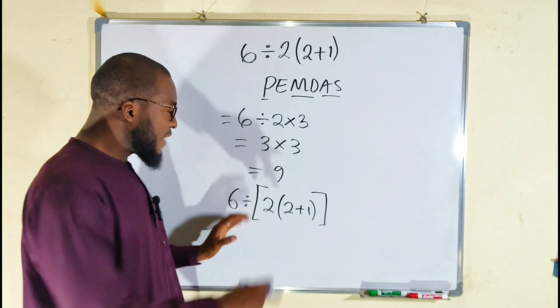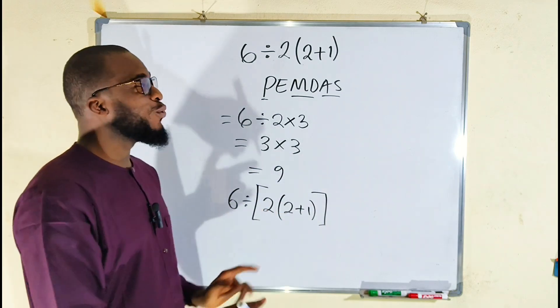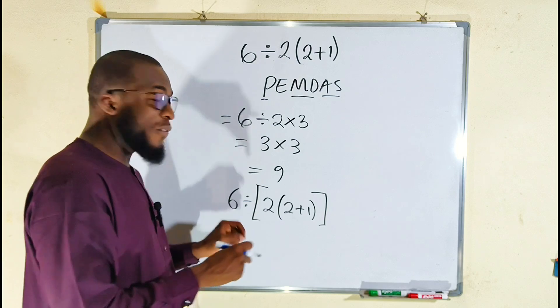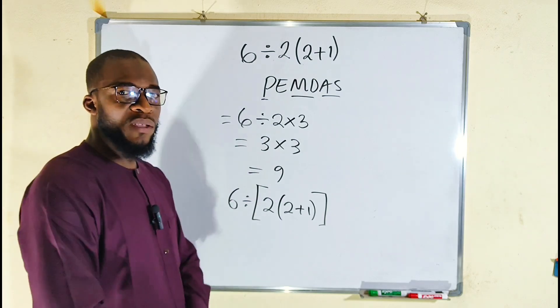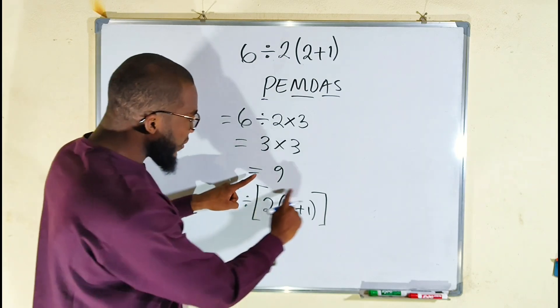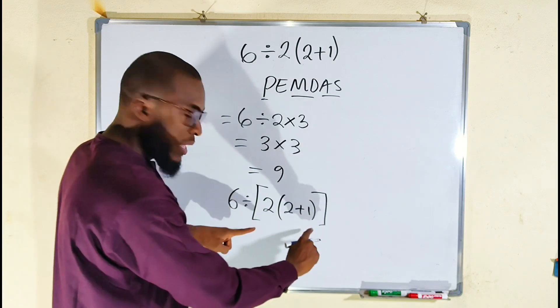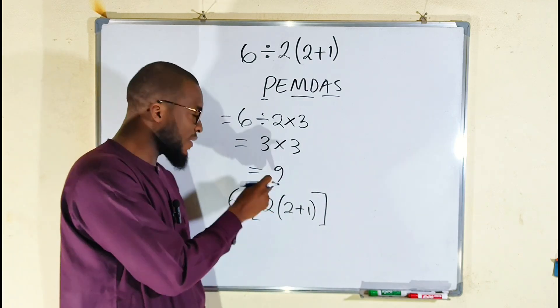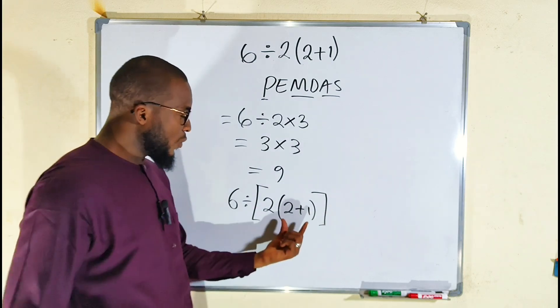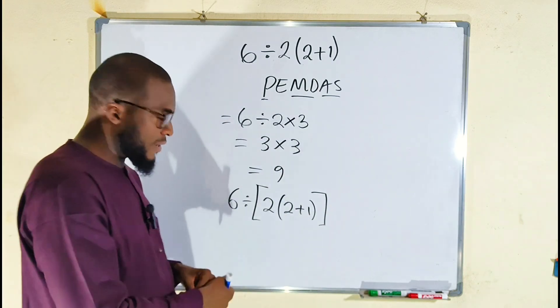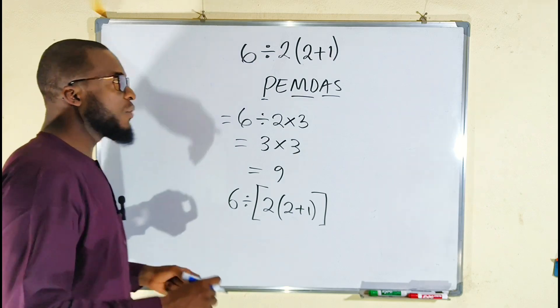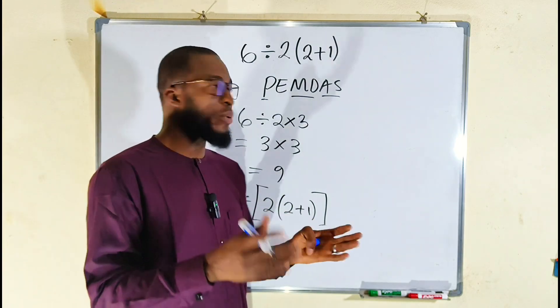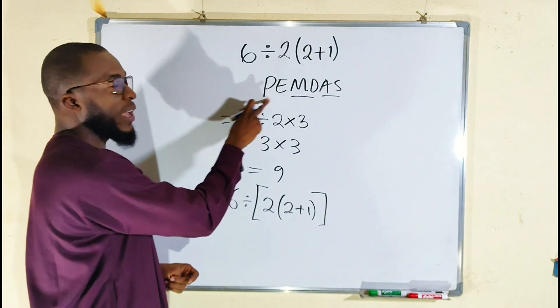They are entirely different. This is telling us 6 should divide the whole of this. This is why I told you misuse of parenthesis may give you wrong answers. So because of this bracket, it means 6 should divide whatever you have inside this bracket. We have a parenthesis here and a bracket.